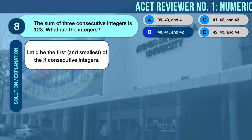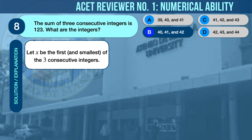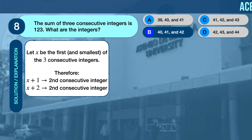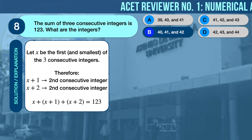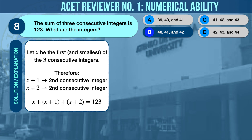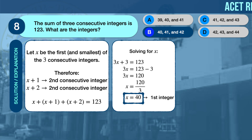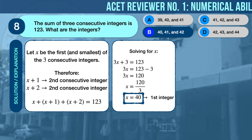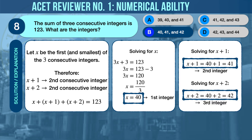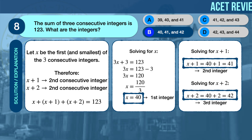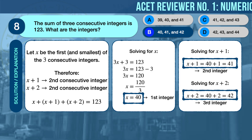The correct answer is B — the integers are 40, 41, and 42. To solve the problem, let x be the first and smallest of the three consecutive integers. The second integer is x + 1 and the third is x + 2. Since their sum is 123, we write: x + (x + 1) + (x + 2) = 123. Solving for x, we arrive at x = 40. Substituting back, the three consecutive integers are 40, 41, and 42.